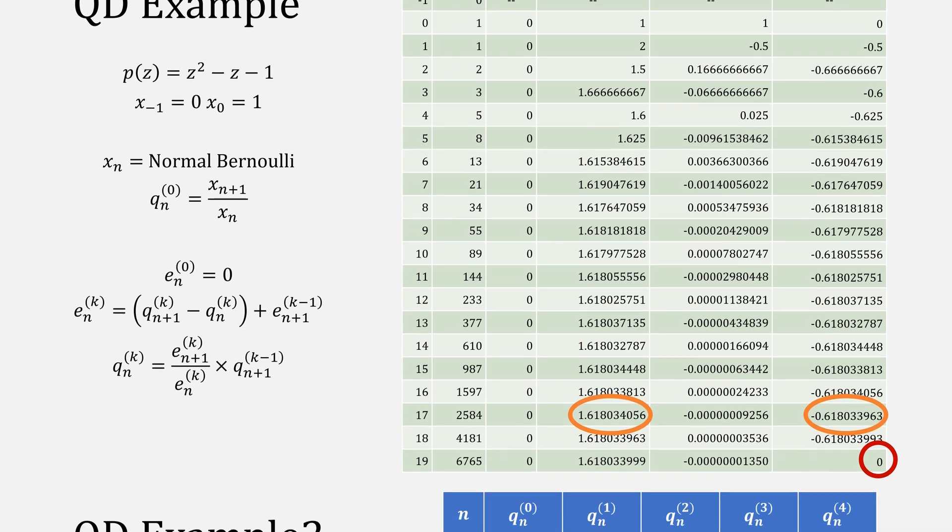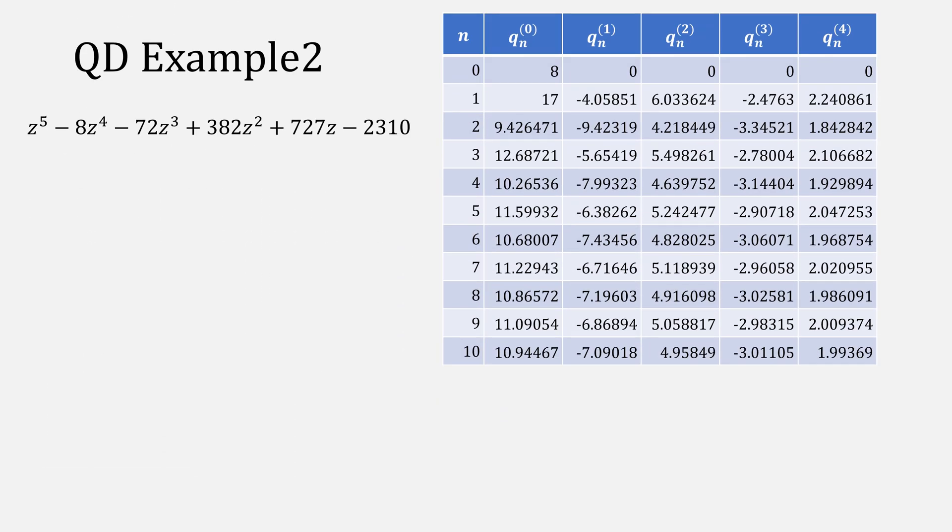Here's another example on our original long polynomial. It finds all of our roots of 11, minus 7, 5, minus 3, and 2.